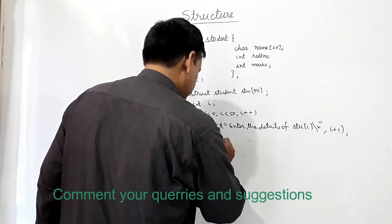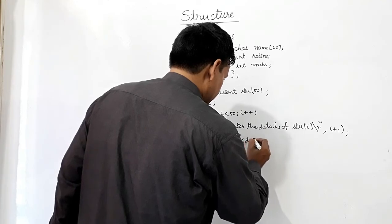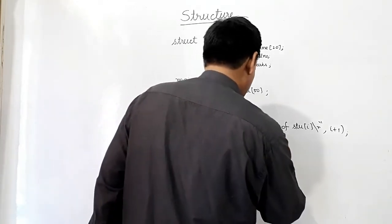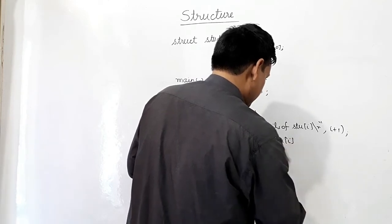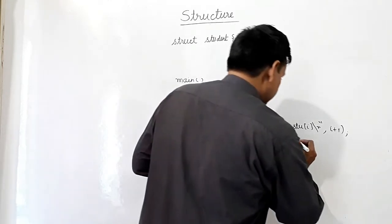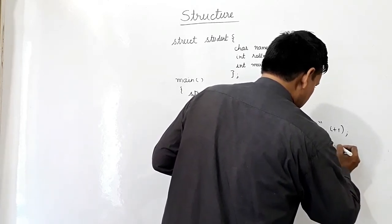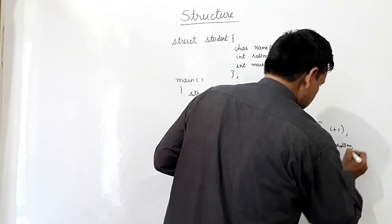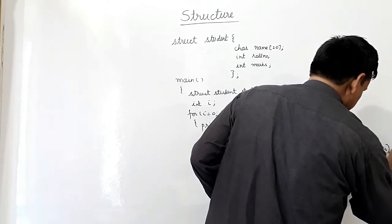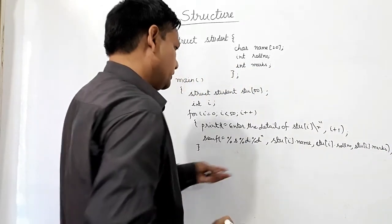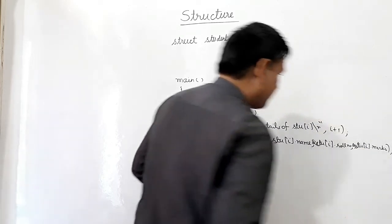Scanf name, percentage s, percentage d, percentage d. Here stu[i] dot name, stu[i] dot role number, stu[i] dot role number. Okay, here because I am using scanf, so ampersand sign will be used here. Ampersand sign.